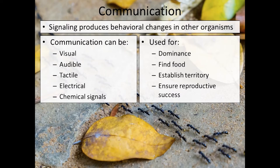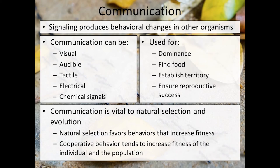Communication is also beneficial for organisms establishing a territory or some particular boundary. It helps organisms get mates or find access to mates, and helps to establish dominance, particularly in social communities. Communication is important in natural selection — organisms that successfully communicate have behaviors that will likely increase their ability to survive and reproduce. Those behaviors are going to be selected for by nature and passed on to future generations. Cooperative behavior and communication within groups helps to increase the fitness not only of an individual but of other organisms within that population.